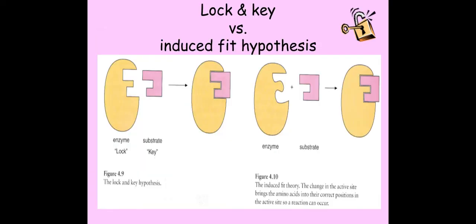Now there are two different theories as to how enzymes work. We have the lock and key hypothesis and the induced fit. So the lock and key hypothesis, it's thought that the substrate has a specific and complementary shape to the active site and the active site is a certain shape that does not change its shape at all.